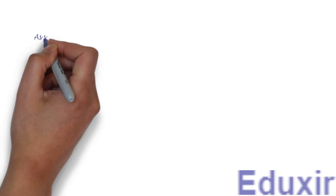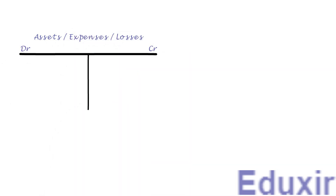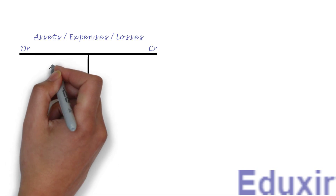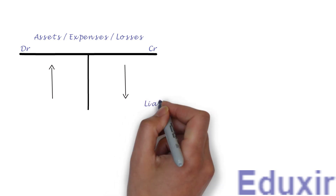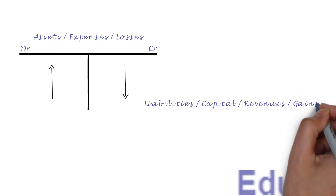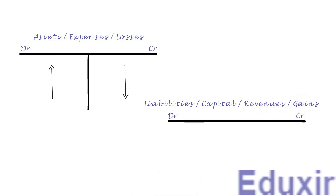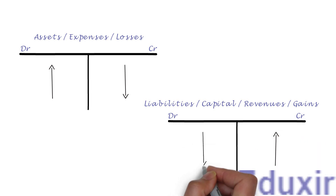Let us first recap the rules used for journalizing the transactions. In case of assets or expenses or losses, any increase in any of these should be debited and any decrease should be credited, whereas in case of liabilities or capital or revenues or gains, any increase in any of these should be credited and any decrease should be debited. With these rules at our hand, let us proceed with the analysis of these transactions one by one.